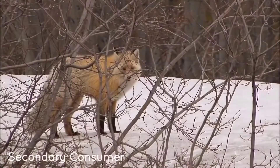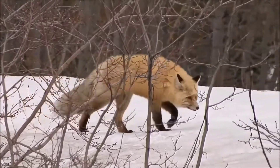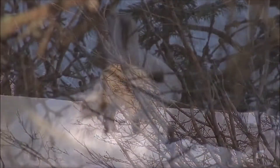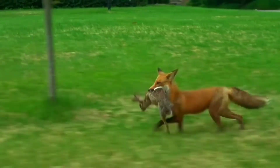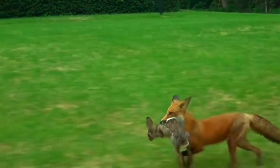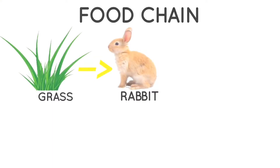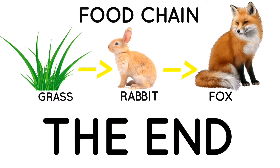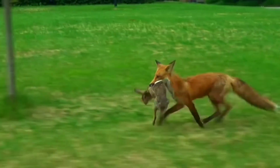Next comes a secondary consumer. The secondary consumer in the food chain is a carnivore and gets their energy by eating other animals. Maybe our rabbit will get eaten by a fox. When the fox eats the rabbit, part of the energy that the rabbit got from the grass is transferred to the fox. This is the end of this simple food chain — the rabbit eats the grass, then the fox eats the rabbit.